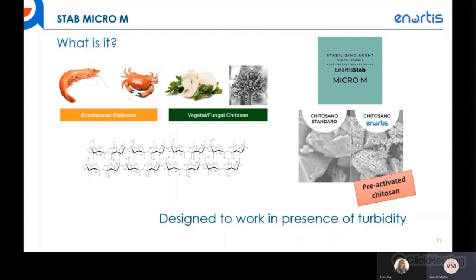Why preactivated chitosan? Preactivated chitosan is chitosan extracted from the fungus Aspergillus niger and treated to have ten times more surface area than regular chitosan, with more positive charges and therefore more energy — making it more powerful. Importantly, it comes from a fungal source, not from crustaceans. Chitosan from crustaceans is allergenic and contains proteins that can be dangerous for human health, which is why An Artis extracts chitosan from fungus.